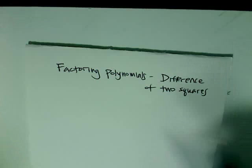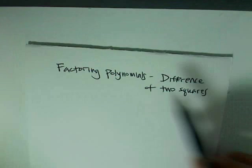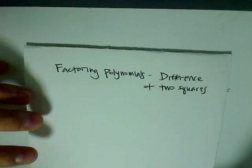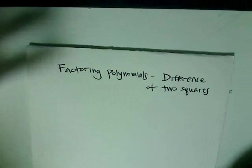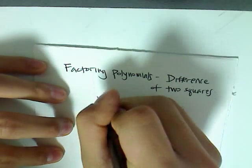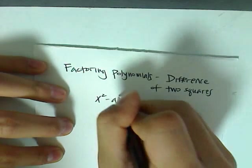So now I'm going to talk about factoring polynomials that are in the form of difference of two squares. So what is a difference of two squares? A difference of two squares is a polynomial that is in the form of x squared minus a squared.